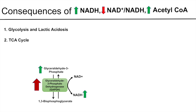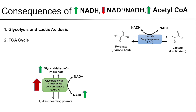Lactic acidosis occurs because pyruvate can be metabolized into lactate via the enzyme lactate dehydrogenase, which converts NADH to NAD+. Because ethanol metabolism produces high levels of NADH, this pushes the reaction toward lactate, leading to an increase in lactic acid and resulting in lactic acidosis.